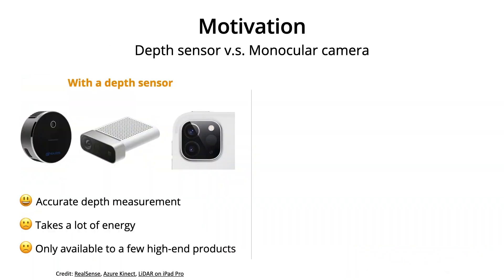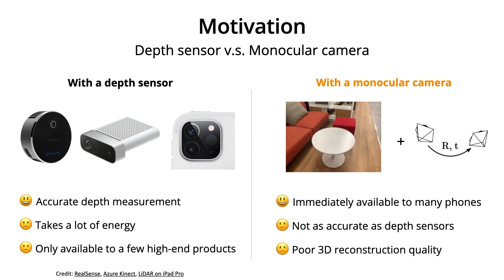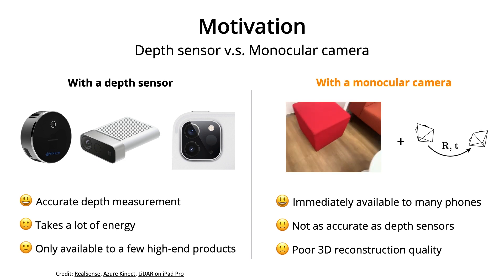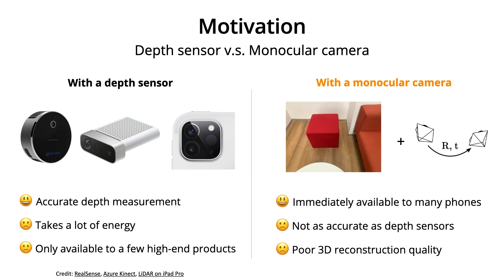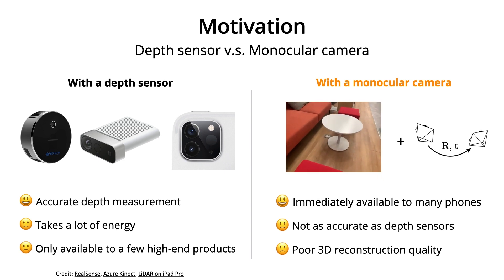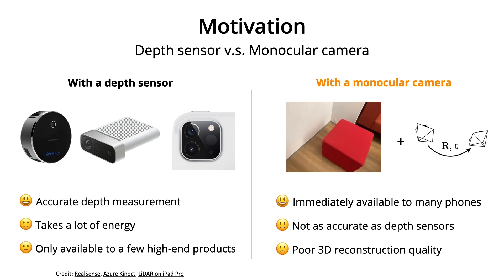Although depth sensors like the LiDAR can provide accurate depth measurement, they usually use a lot of energy and are only available to a few high-end products. On the other hand, if 3D reconstruction only requires a monocular camera, it can be immediately available to a massive amount of phones. However, depth estimation with a monocular camera is not as accurate as depth sensors, and the 3D reconstruction quality is not ideal.